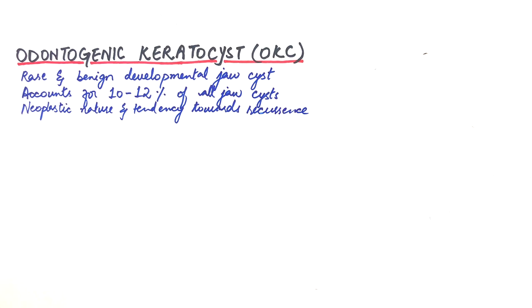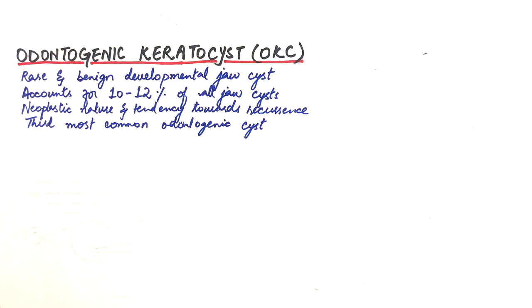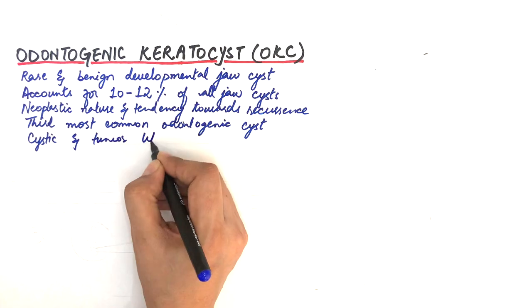Following dentigerous and radicular cysts, OKCs are considered the third most common and most important odontogenic or tooth-derived cyst. It has both cystic and tumor-like nature.